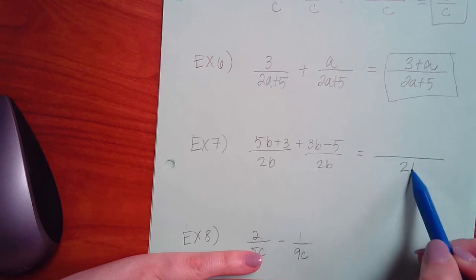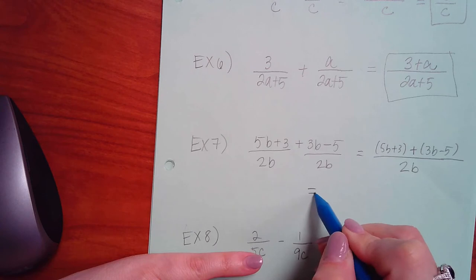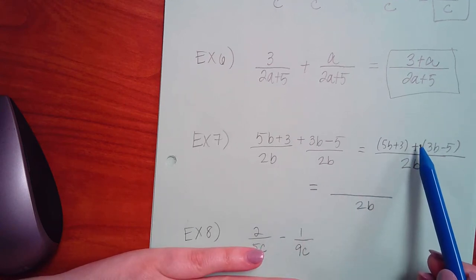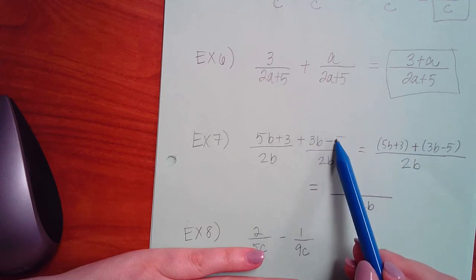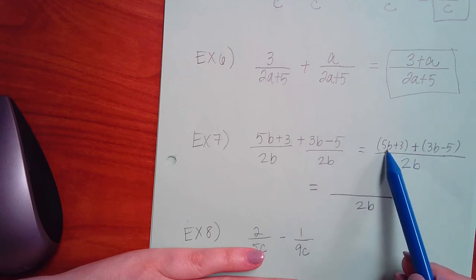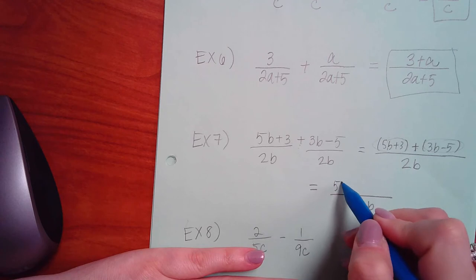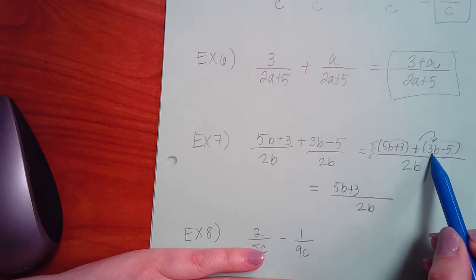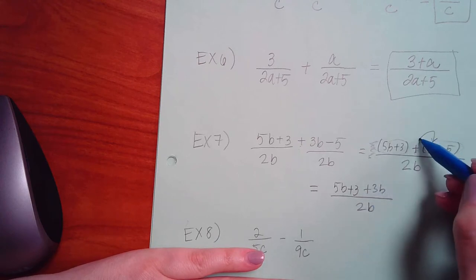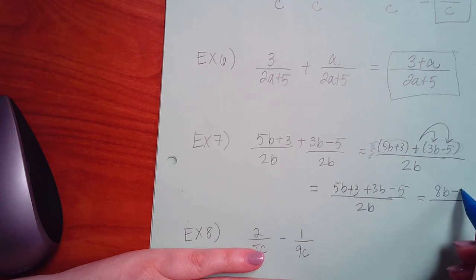Same with this one. The denominator is the same, so I'm going to put 2B. But I have 5B plus 3 plus 3B minus 5. Now when it has a plus sign, it doesn't really matter. But if this were a minus sign, you would have to remember that you are subtracting that entire numerator. So if this were a minus in the middle, it would have to be distributed to both. I got lucky because it's a plus. So this should be 5B plus 3. Here there's a positive. What's a positive times a positive? A positive. And what's a positive times a negative? A negative. And so then if I combine my like terms, I have 8B minus 2.